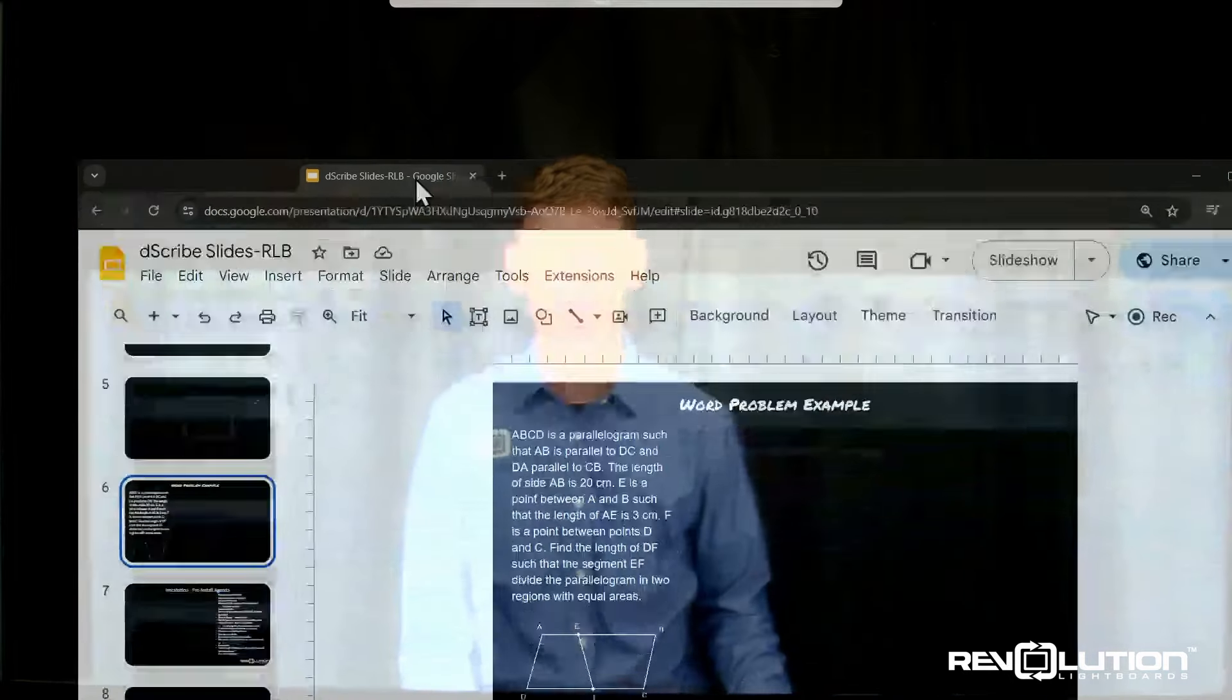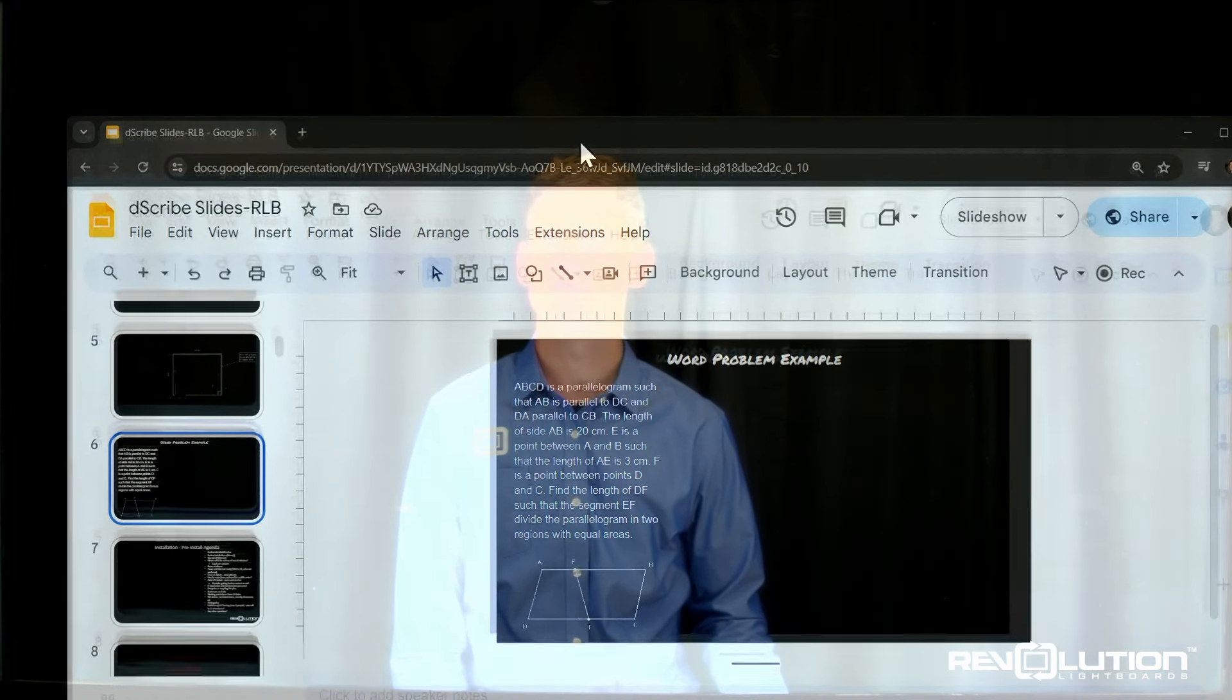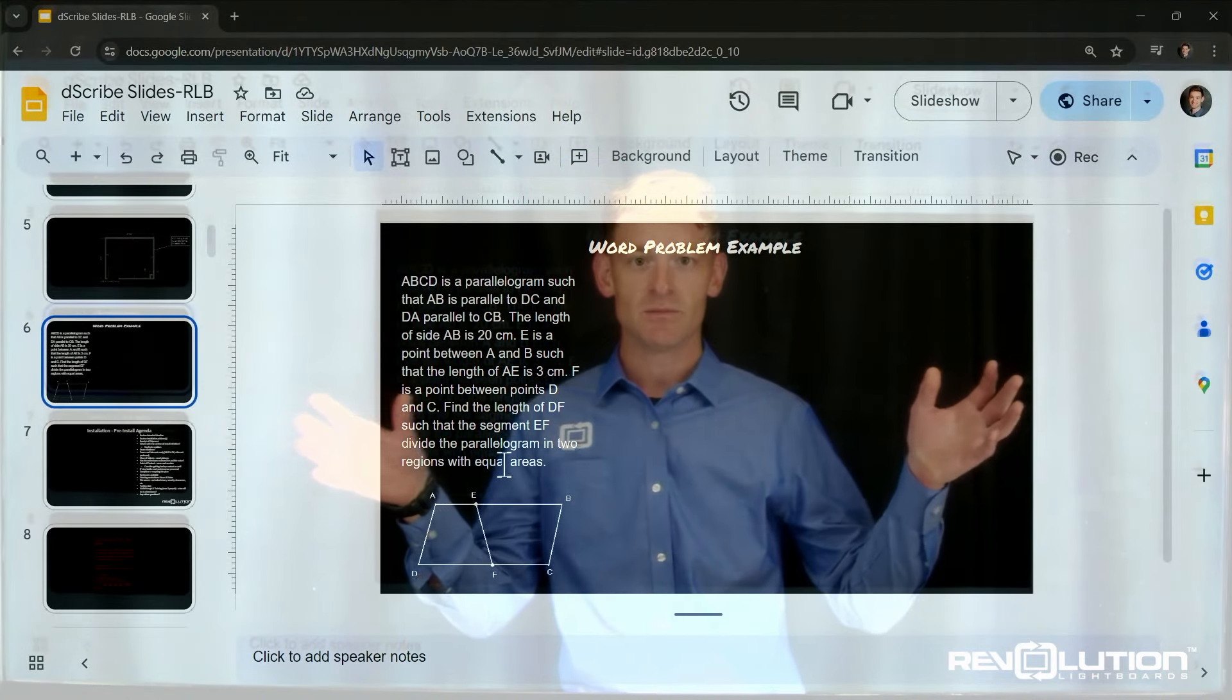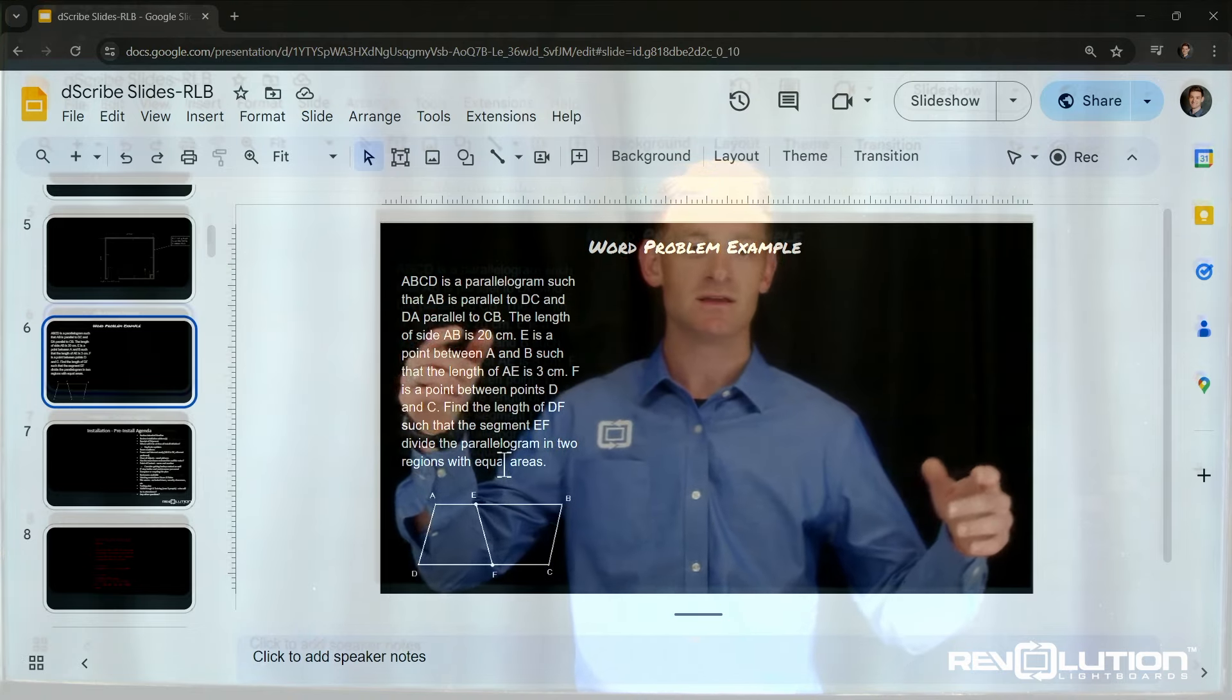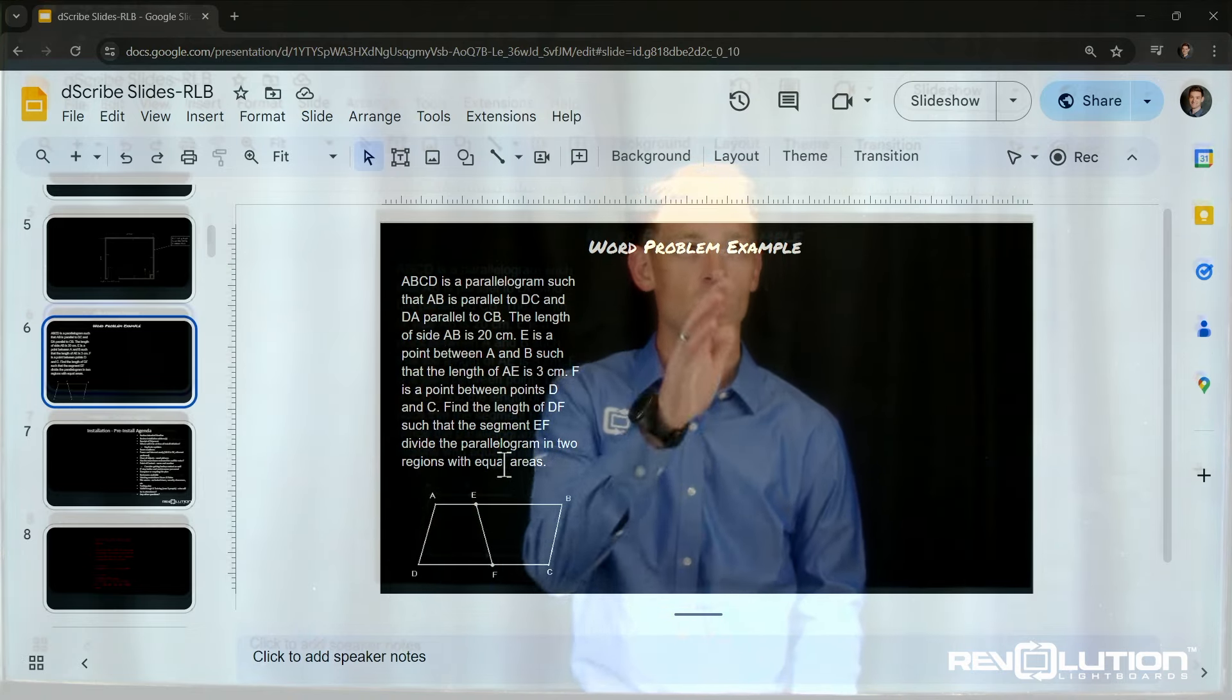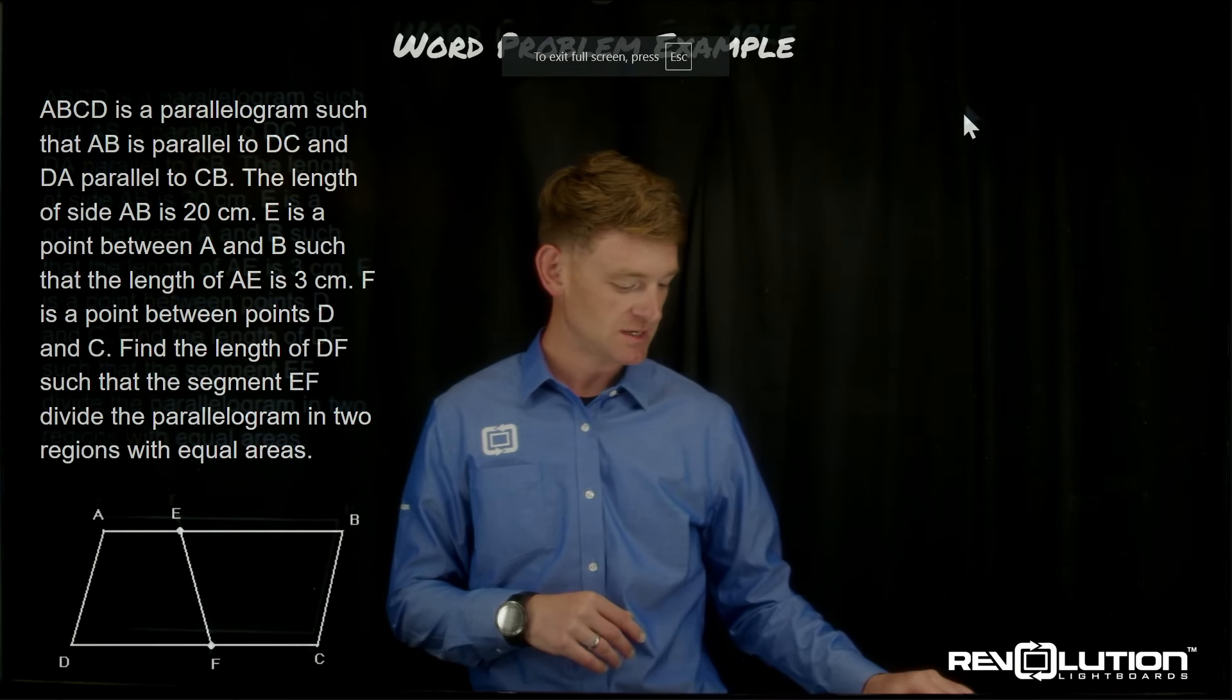The first program is Google Slides. Again, black is made transparent. Whatever else is not black is still seen on the screen with me. Once I go into slideshow mode, I have the ability to see that here.